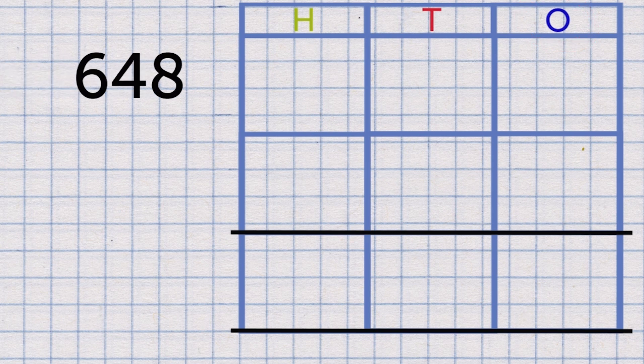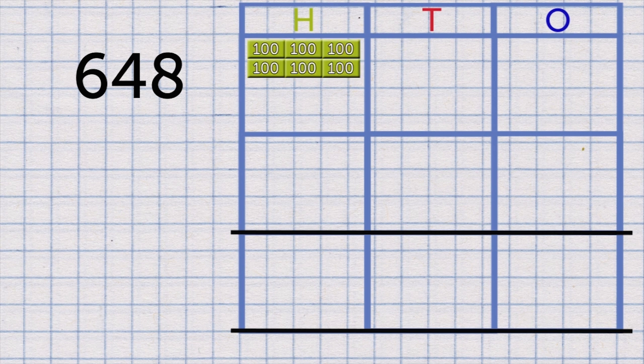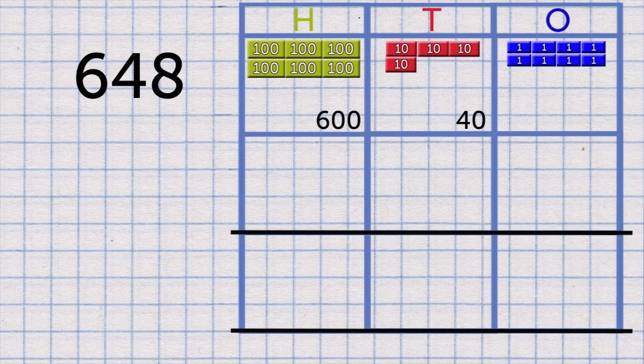Start with the largest number, 648. It's made up of 6 hundreds, 4 tens, and 8 ones.